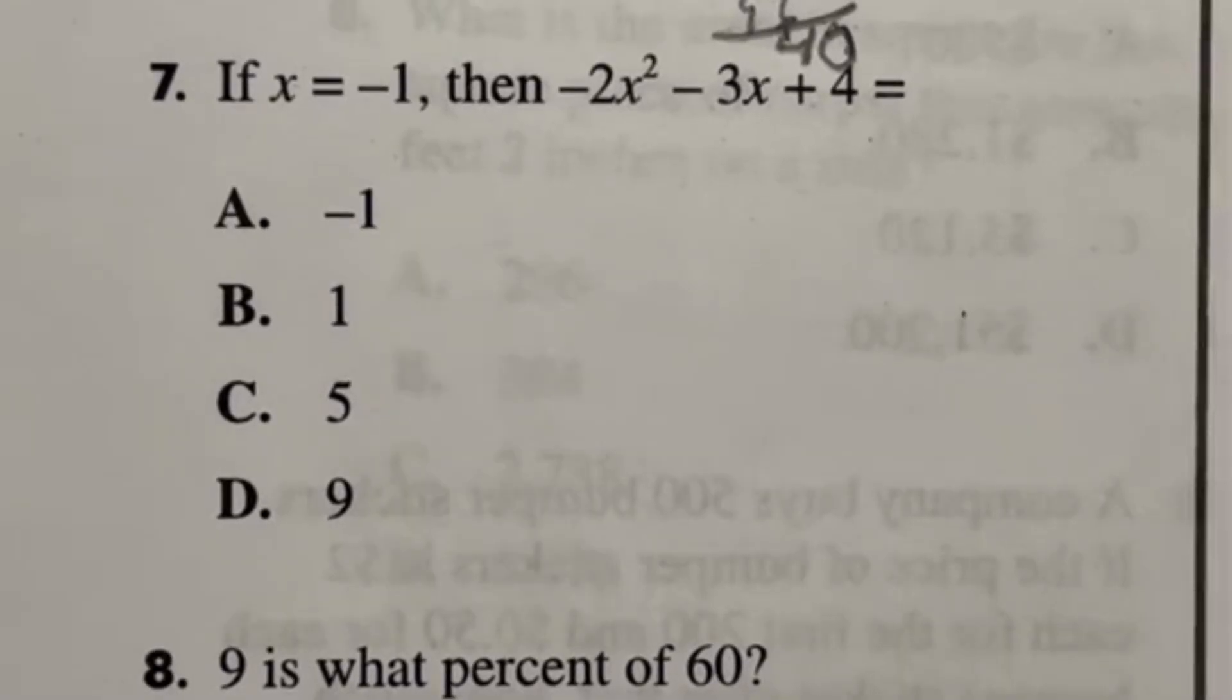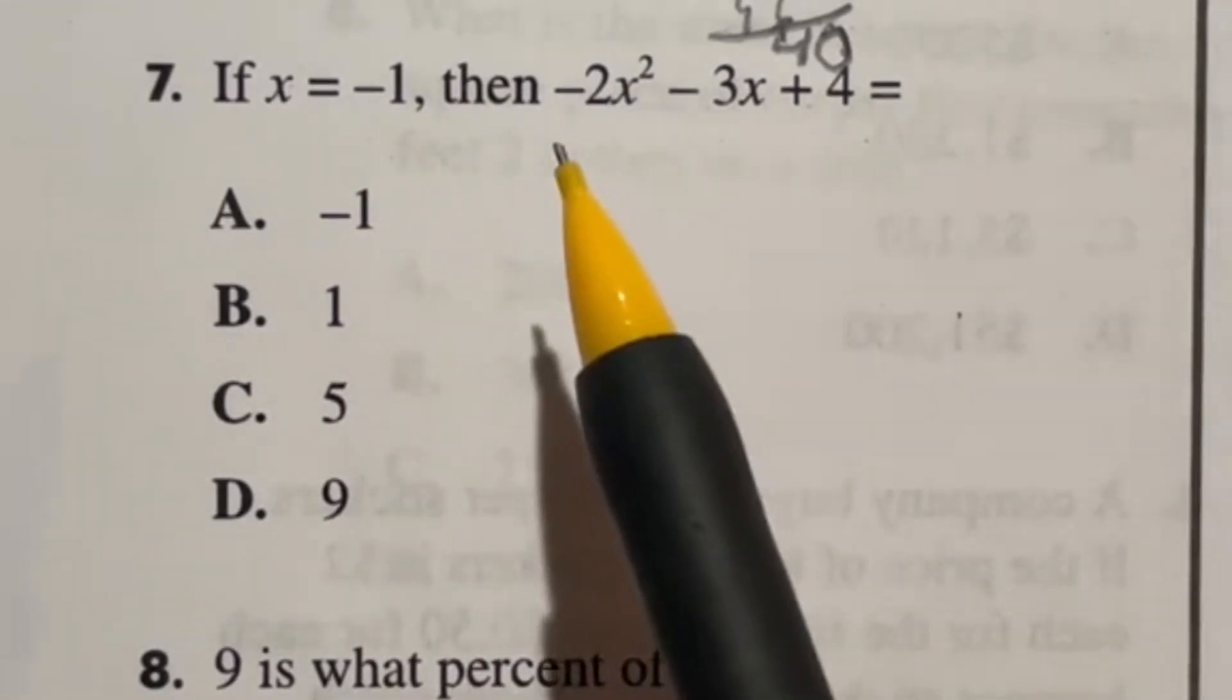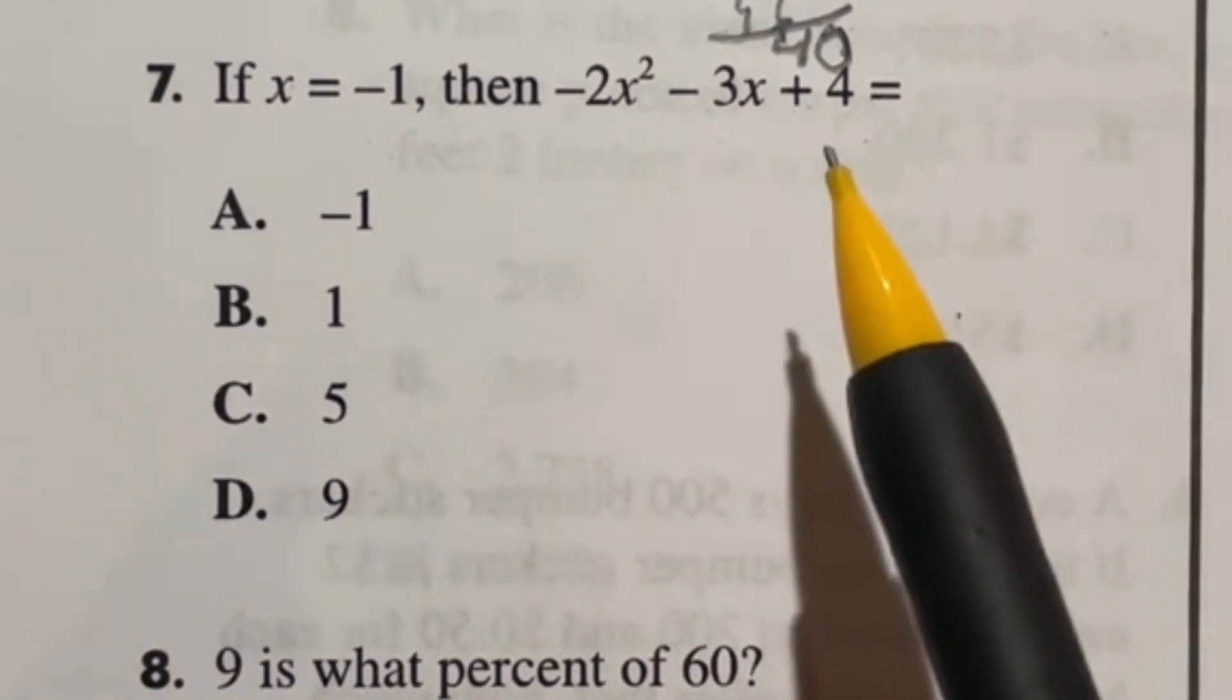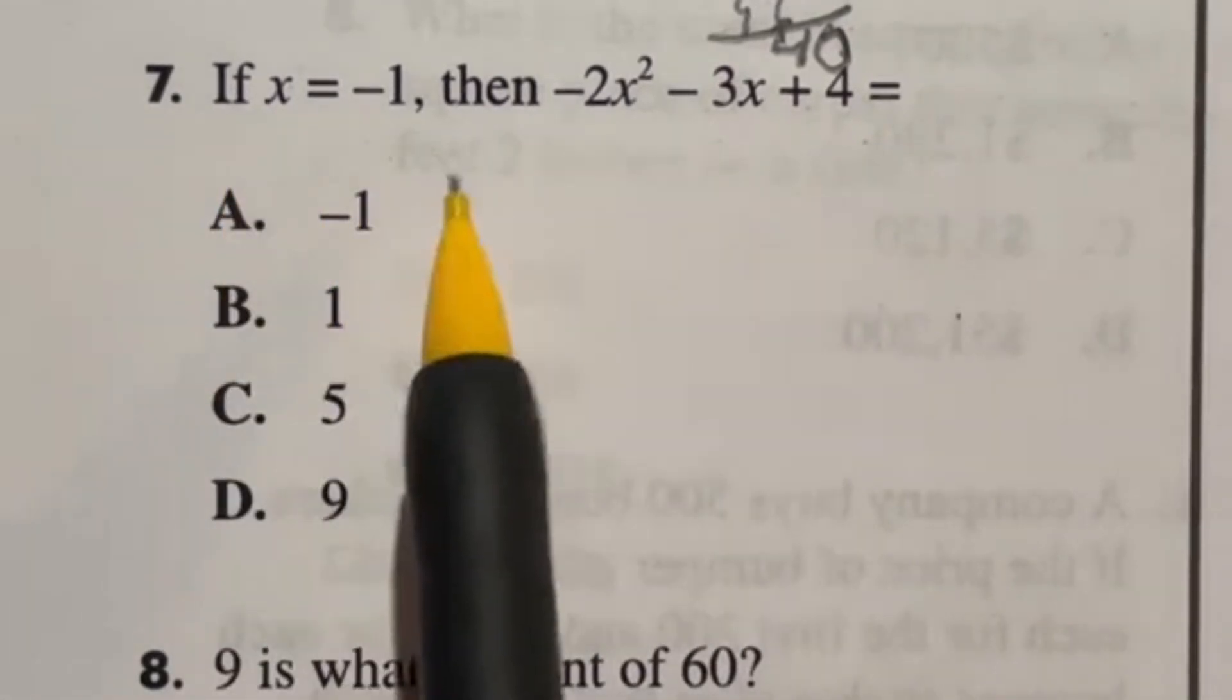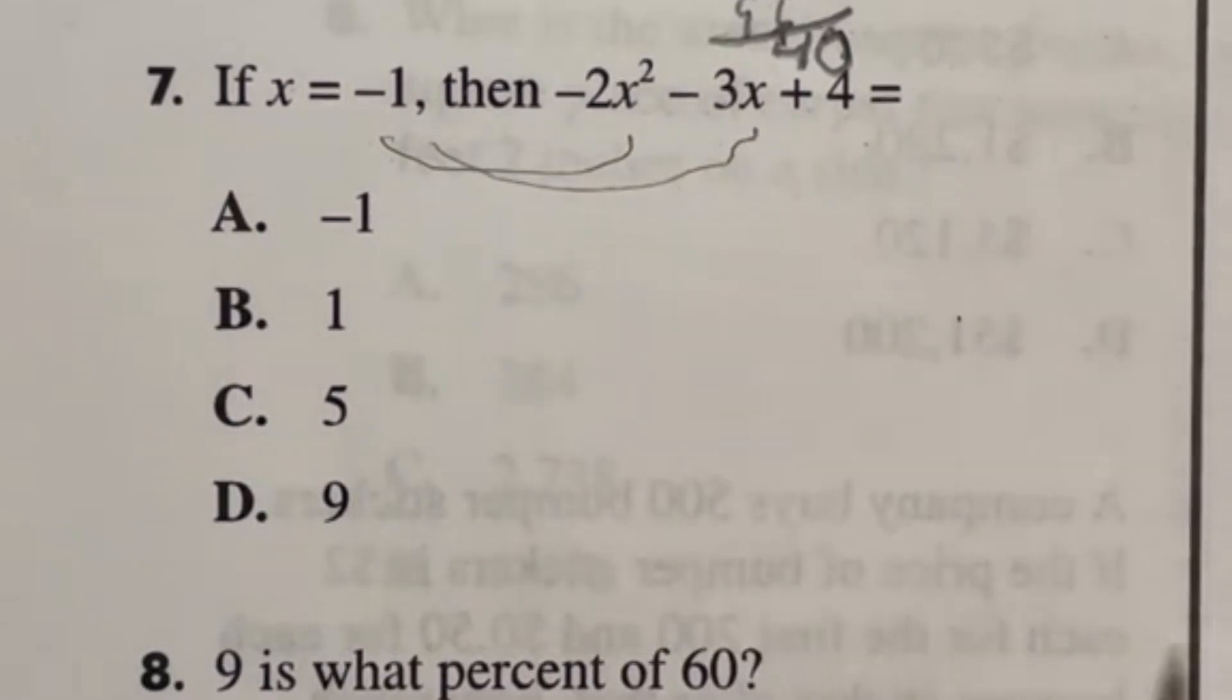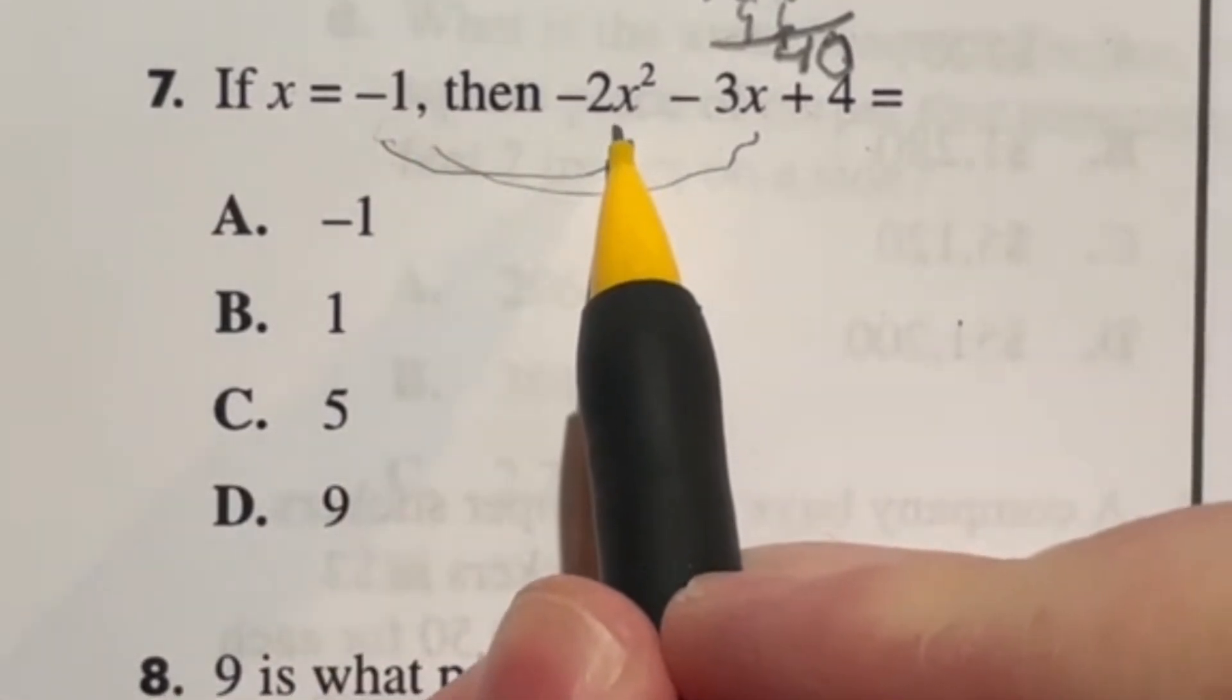Alright, let's do some easy mode here. Number seven says that if x is negative one, then negative 2x squared minus 3x plus 4 is equal to what? So whenever you see this whole idea of like x equal to number and then a bunch of x's, you're just plugging it in everywhere you see it. So here's the deal.